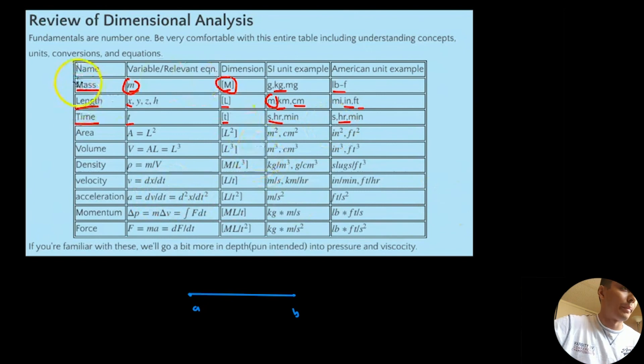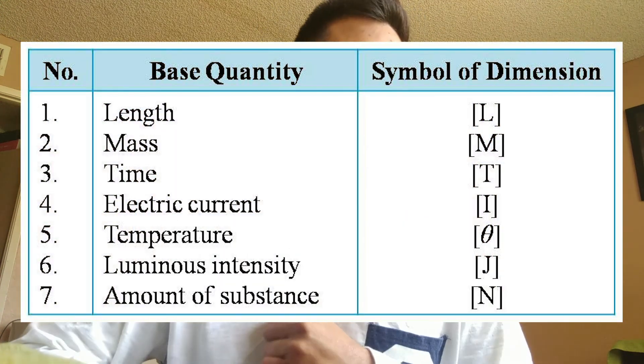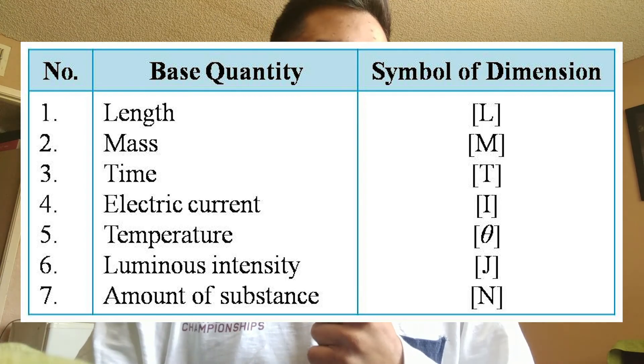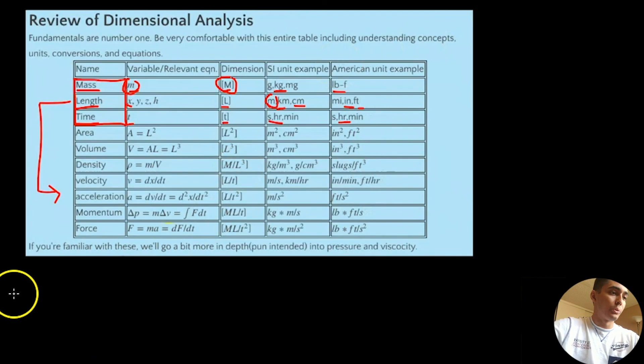Alright, so those are the base dimensions: mass, length, and time. So mass, length, and time are going to be used to derive pretty much every other equation you'll ever use in four years, whether it's physics, chemical engineering. The ones that we're neglecting right now are temperature, which we'll consider, and things related to electrical engineering. So there's also current. We're just going to have mass, length, and time, and we're going to use them to derive several other types of dimensions.